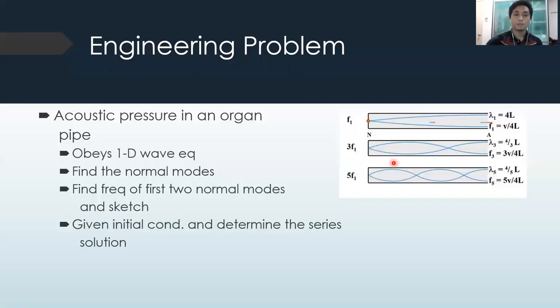The problem that I chose is an acoustic pressure problem in an organ pipe. It is given that the acoustic pressure obeys 1D wave equation. We are required to find the normal modes of the pressure equation and then find the frequency and sketch the pressure distribution. And for the third one, we are given initial conditions and we need to determine the series solution for the pressure.